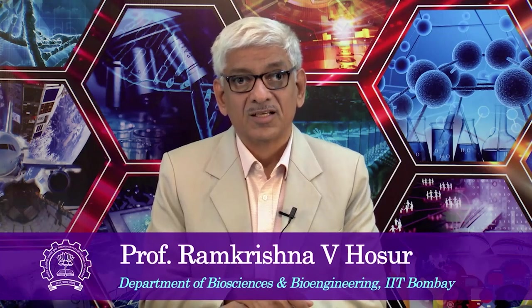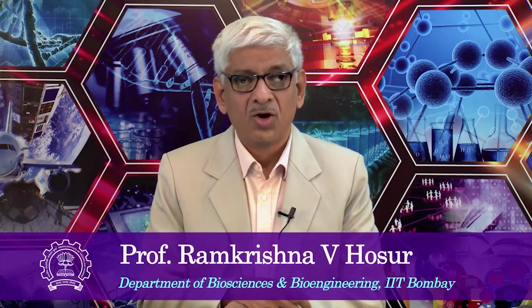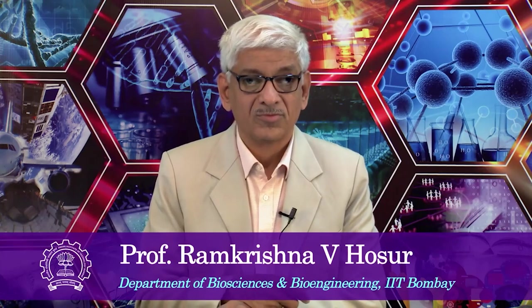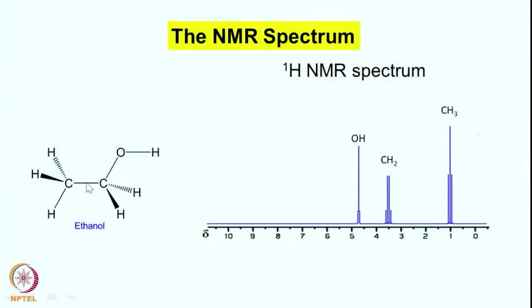Today we are going to start a new chapter, namely Fourier transform NMR spectroscopy. This has to do with how we actually record the NMR spectrum. You have already seen in the previous lectures some details about the characteristics of NMR spectra. There are parameters called chemical shift and coupling constants. For example, if you have a molecule such as ethanol, one of the simplest molecules on which the chemical shift was discovered by Dr. Dharmati when he was in Felix Bloch's lab.